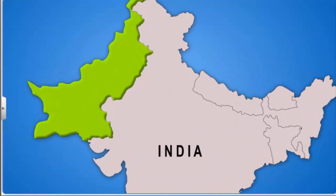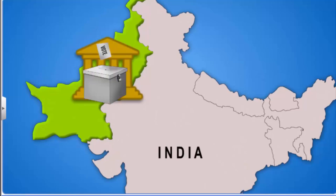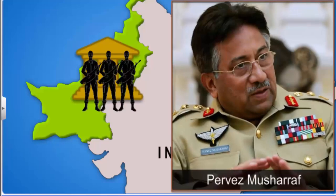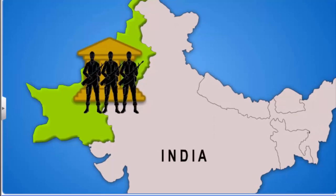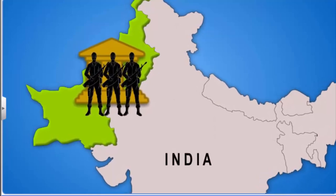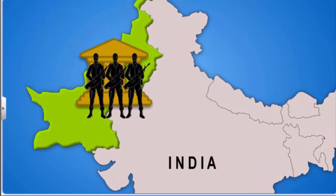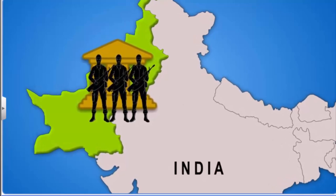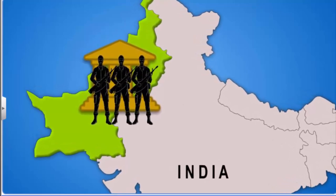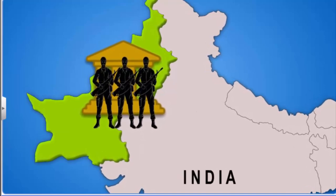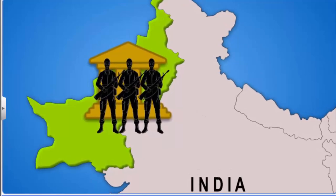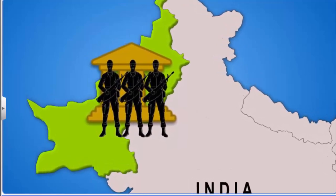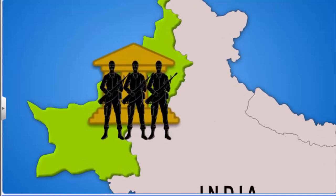Pakistan had a democratically elected government until October 1999, when General Pervez Musharraf led a military coup. A coup is the sudden, unconstitutional deposition of a legitimate government, usually led by a small group of the existing state establishment — typically the military — to replace the deposed government with another, either civil or military.